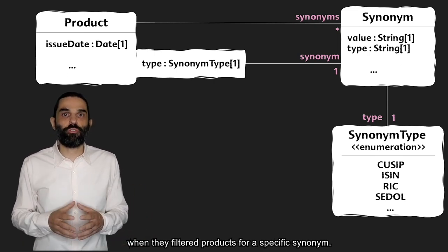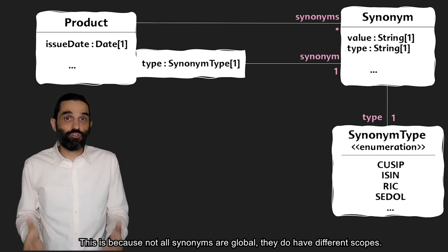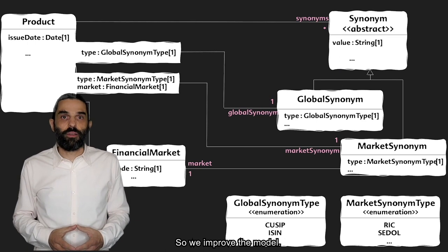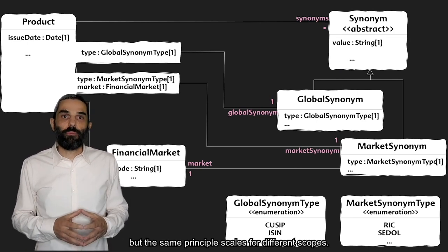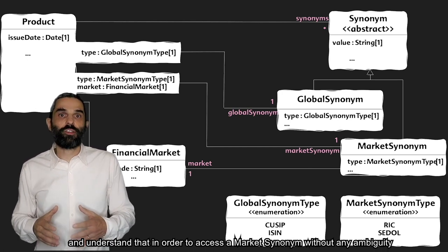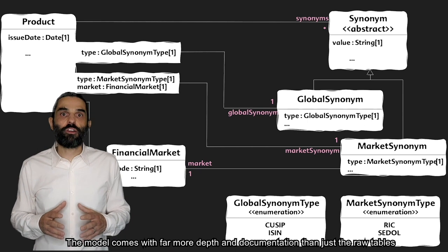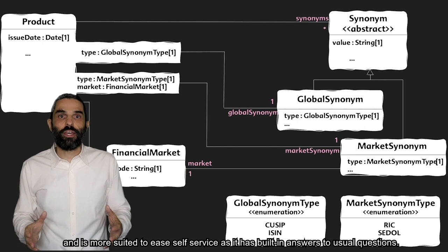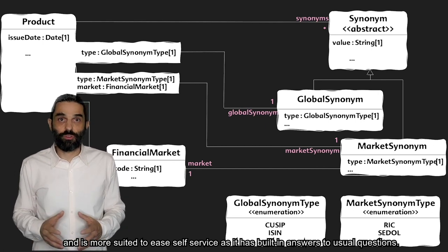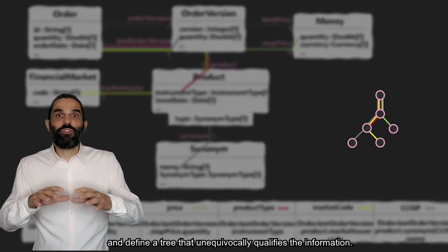So we give it to our users and they come back saying that the model is broken and that they had multiple products come in when they filter products for a specific synonym. This is because not all synonyms are global. They do have different scopes. Some are valid for a market, some for a region, and some are global. So we improve the model. I tried it only for global and market synonyms, but the same principle scales for different scopes. Now users are protected by the API and understand that in order to access a market synonym without any ambiguity they will also need to provide a financial market. The model comes with far more depth and documentation than just the raw tables and is more suited to ease self-service and has built-in answers to usual questions.